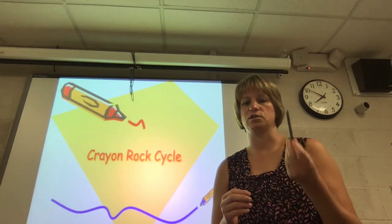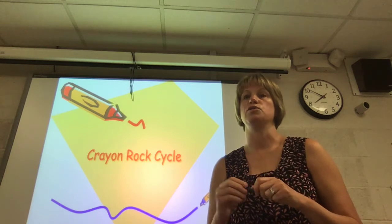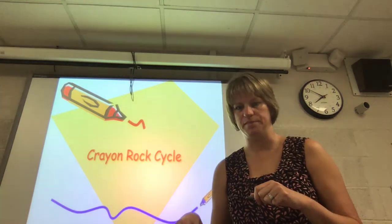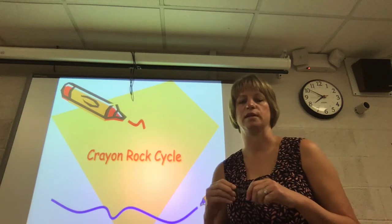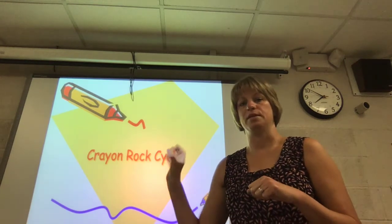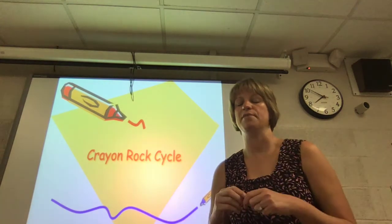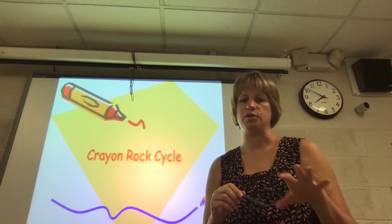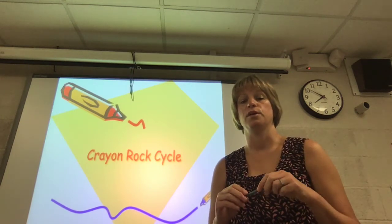So the way this is going to work is that I'm going to start with an igneous crayon and I am going to do something to the crayon that you either write or type, depending on if you're in class or digital, in the next box what we did to it. And then after you watch the video of what I'm going to do to it, you are going to be figuring out what this is like in the rock cycle.